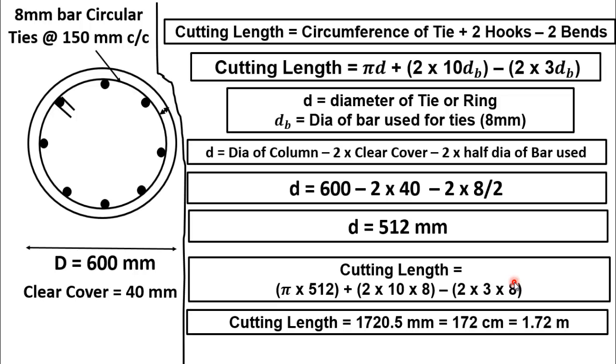After simple calculation, we will get the total cutting length of this circular tie is 1720.5 mm. To change it into centimeter divide it by 10, we will get 172 cm. If you want to change it into meter, just divide this value by 100, we will get 1.72 meter.